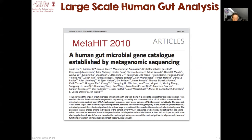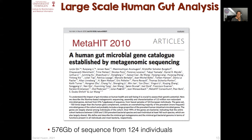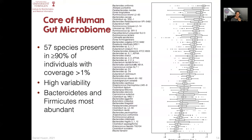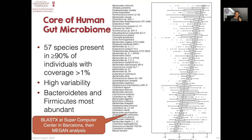One of the main results from MetaHit was a list of species present in most individuals with a coverage of at least 1%. The analysis back in those days was done by BLASTX at the supercomputer center in Barcelona, followed by a MEGAN analysis. So the theme here is: as metagenome datasets get bigger, the computational issues become more severe.